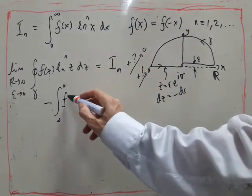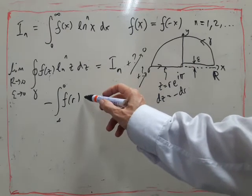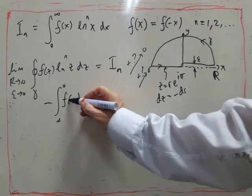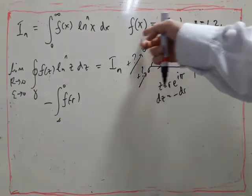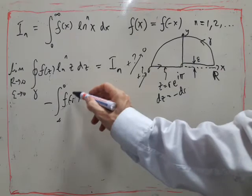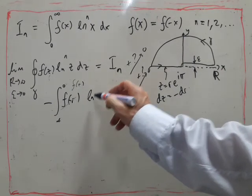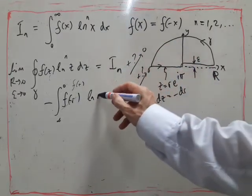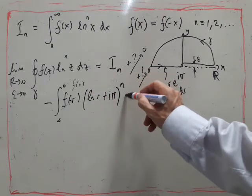So we end up with, there's no branch cut, so we can just write f of r instead of f of z. But when it comes to f of minus r, f of minus r is of course equal to f of r since f is even. So we can change that to f of r. And then we're multiplying that by (log r plus i pi) raised to the power n.